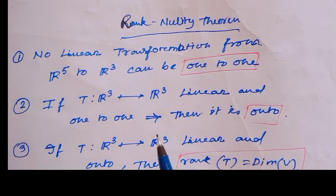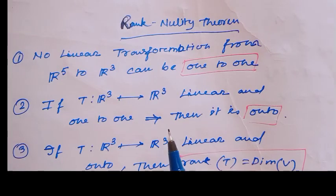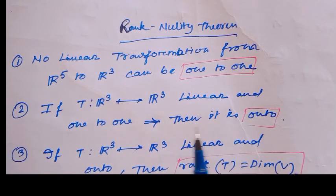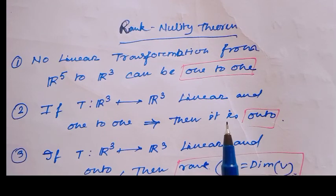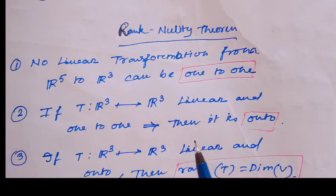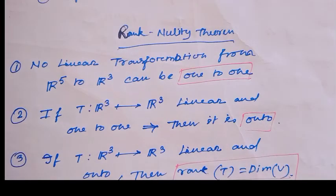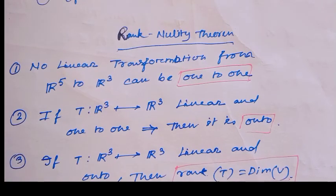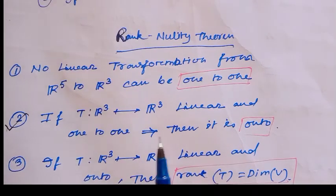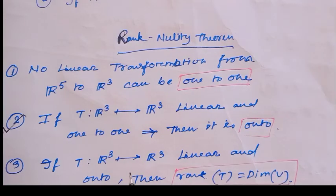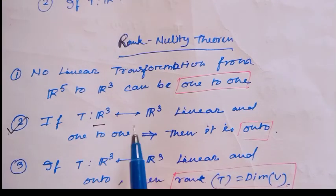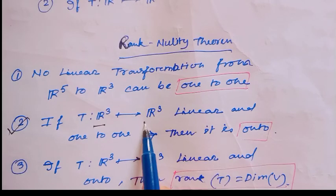Next example: if T is a linear transformation from R3 to R3 which is linear and one-to-one, then T is also onto. This is true because, as I showed a few minutes ago, when the dimension of V and the dimension of W are equal, one-to-one implies onto.